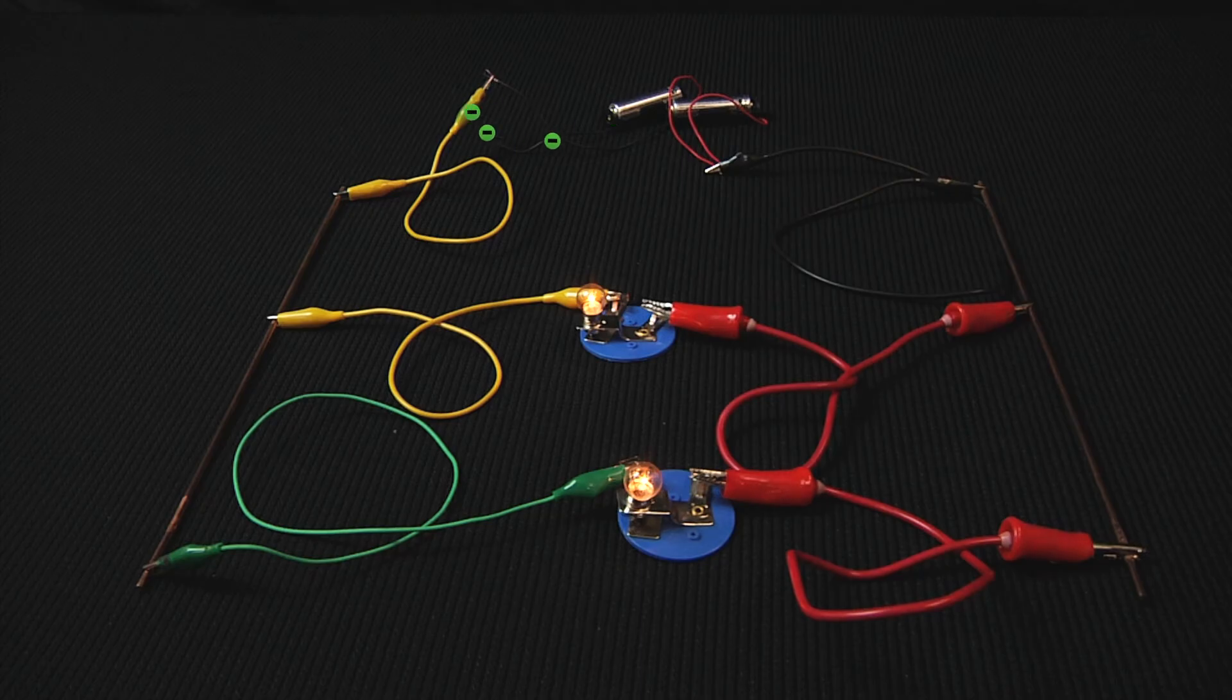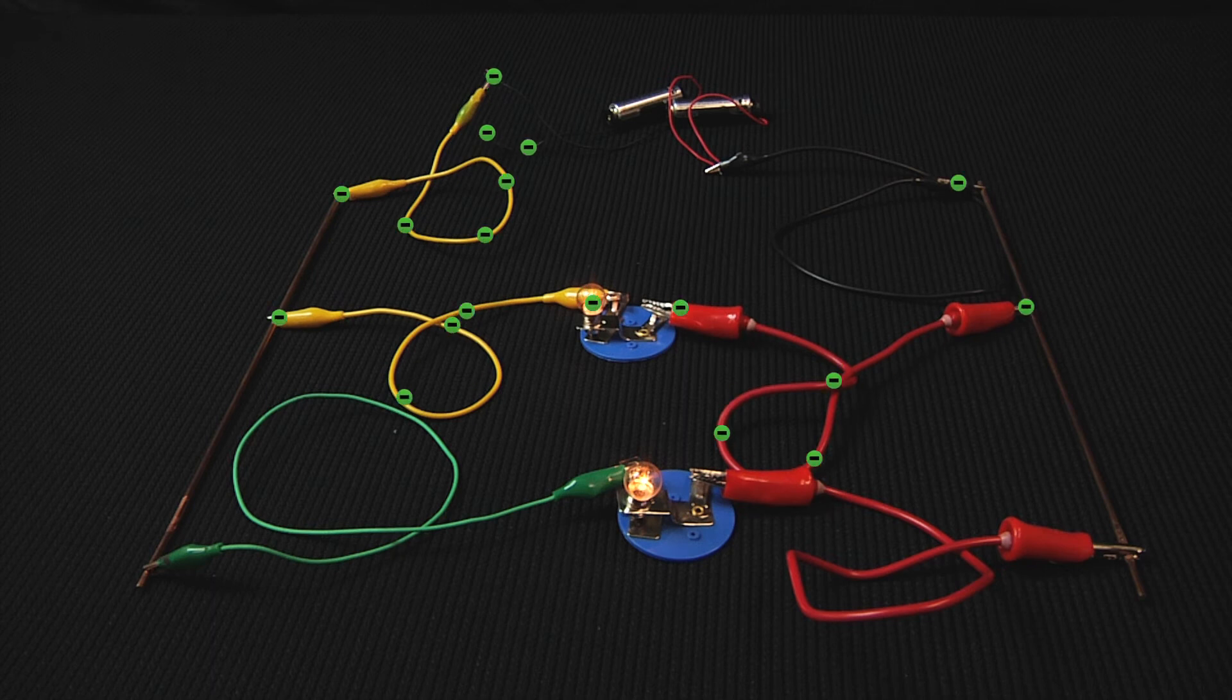A parallel circuit has multiple branches or loops that an electrical current can travel through. Usually a device will be placed on its own branch to draw power.